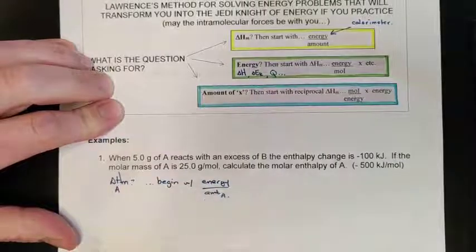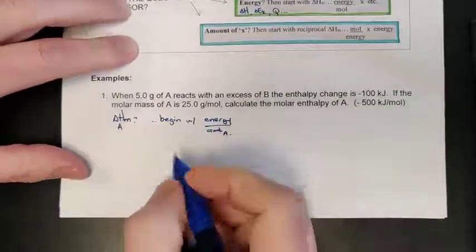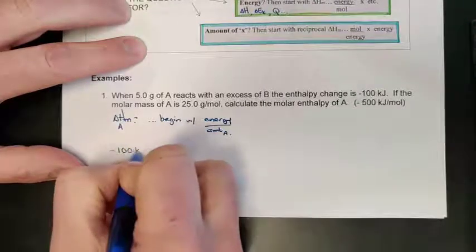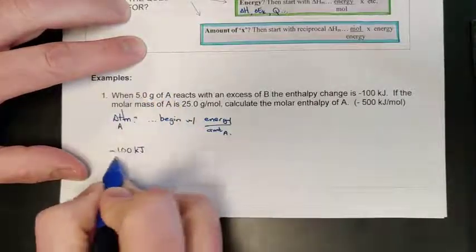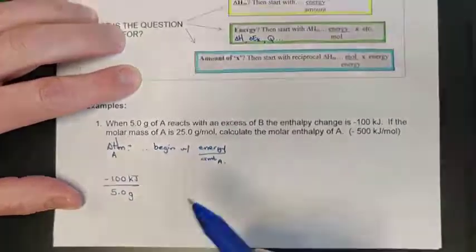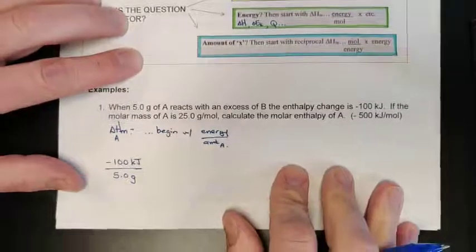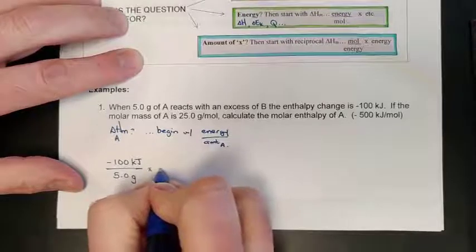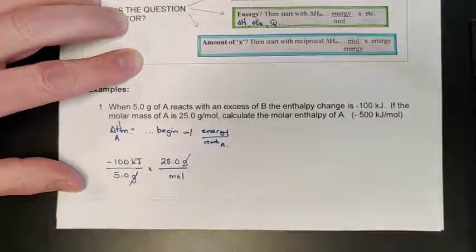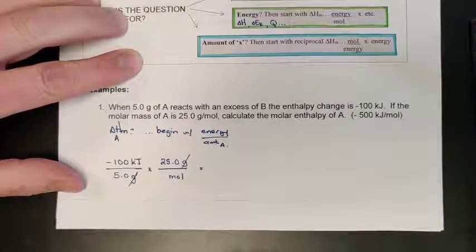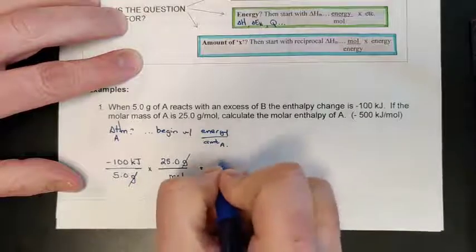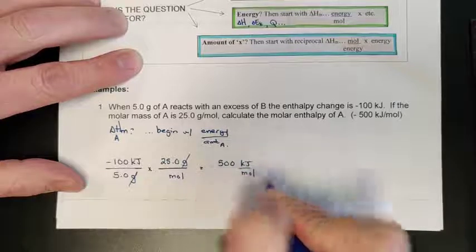I begin with the energy over the chemical amount of A. The energy given is negative 100 kilojoules, and the amount of A is 5 grams. That gives kilojoules per gram, but molar enthalpy needs kilojoules per mole. So I convert using the molar mass: 25.0 grams per mole. Grams cancel, leaving kilojoules over moles. Running through the calculator: 100 × 25 ÷ 5 gives 500, so the molar enthalpy is negative 500 kilojoules per mole.